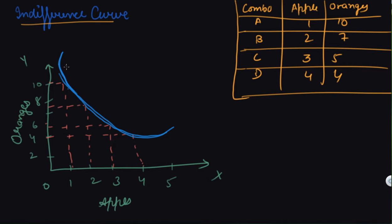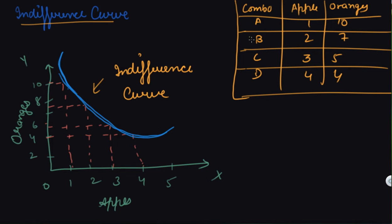Plotting those points gives you an indifference curve. So this is your indifference curve — a curve which is a diagrammatic representation of an indifference set. It shows different combinations of two commodities, like apples and oranges, between which a consumer is indifferent. Each combination offers the same level of satisfaction. On this indifference curve, whatever points you get, the consumer is at the same level of satisfaction.